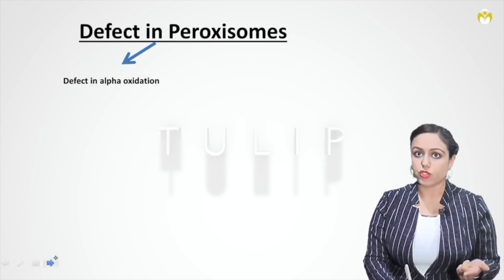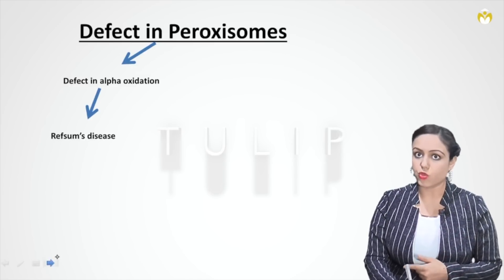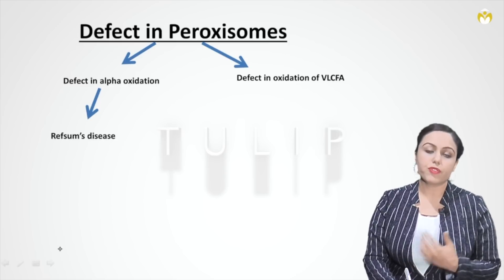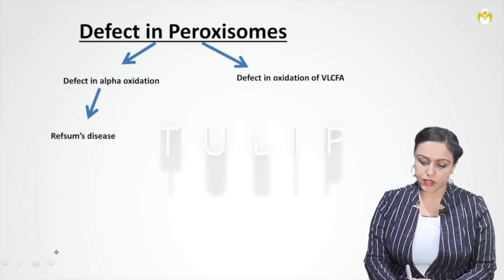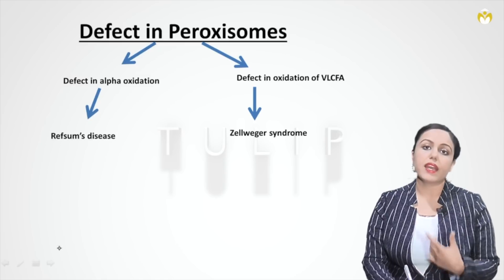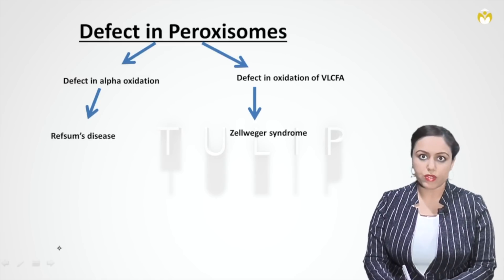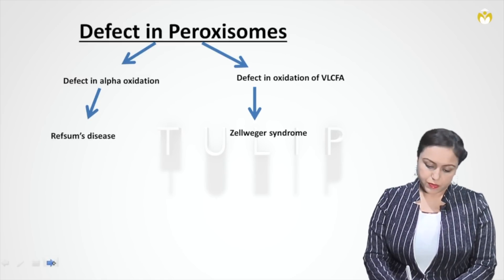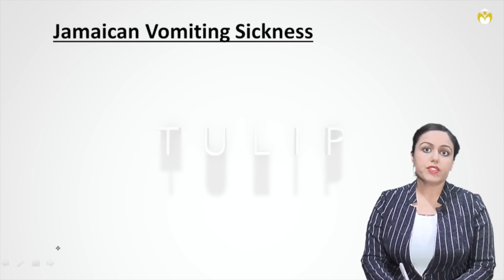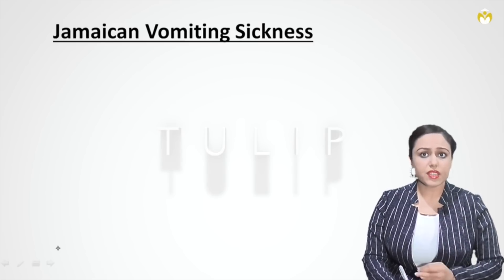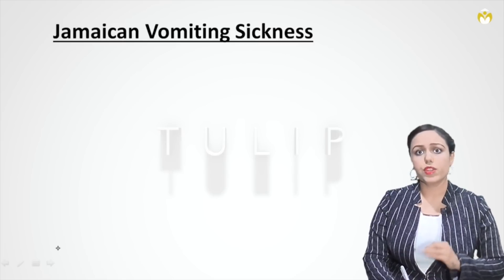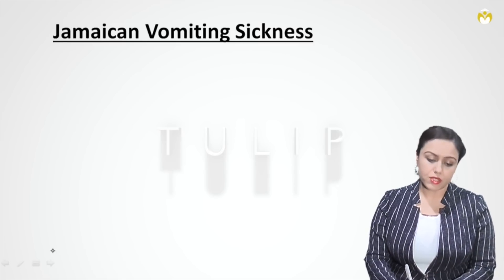Defect in peroxisomes can lead to two syndromes: one is defect in alpha oxidation, which leads to Refsum's disease; the other is defect in the oxidation of very long chain fatty acids, which leads to Zellweger syndrome. Jamaican vomiting sickness occurs due to a defect in beta oxidation of fatty acid.